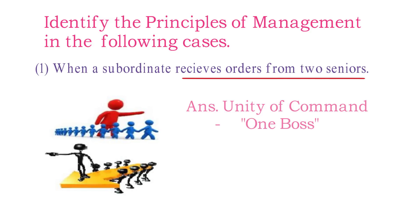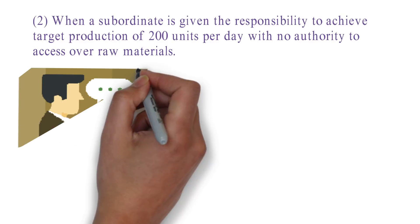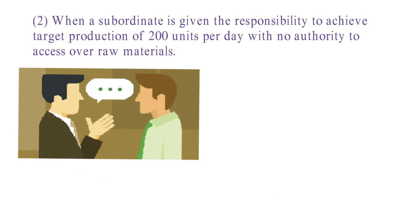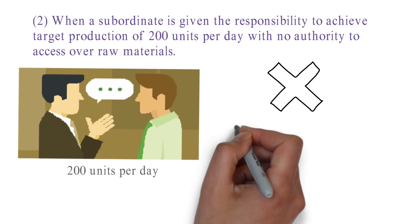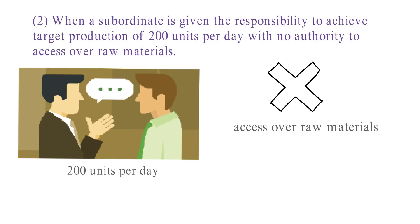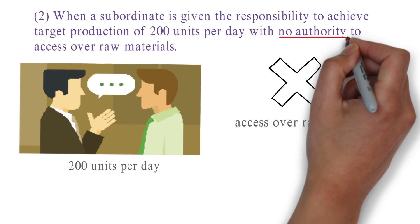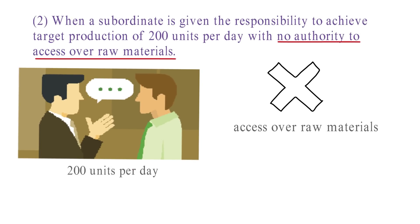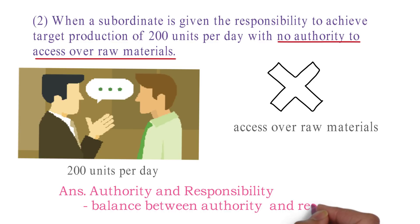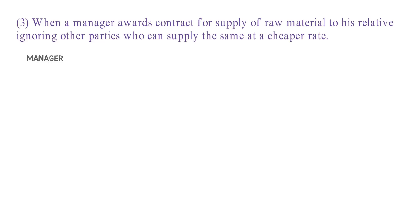Example two: when a subordinate is given the responsibility to achieve a target production of 200 units per day but has no authority or access over the raw materials. Here the keywords are 'no authority to access over the raw materials,' hence the principle violated is Authority and Responsibility, because he has been given responsibility but has no authority to fulfill it.